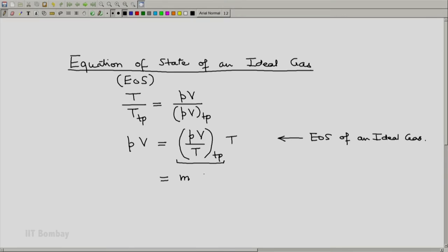So we write this as M into PV by T at the triple point of water of that ideal gas multiplied by T. Now this term which is the ratio of the product PV to T at the triple point of that ideal gas is given the symbol R. And this R is known as the gas constant for that particular gas.